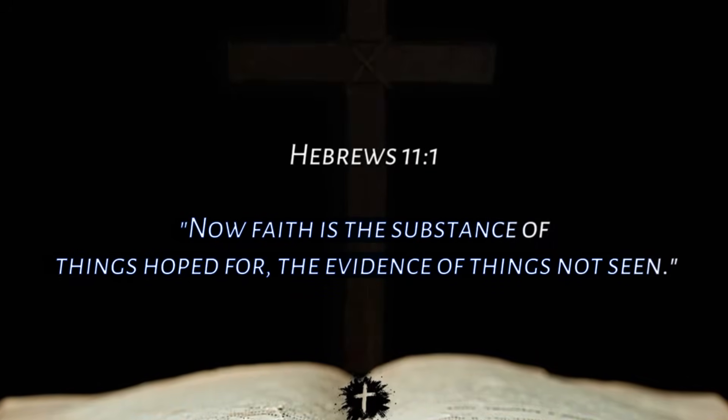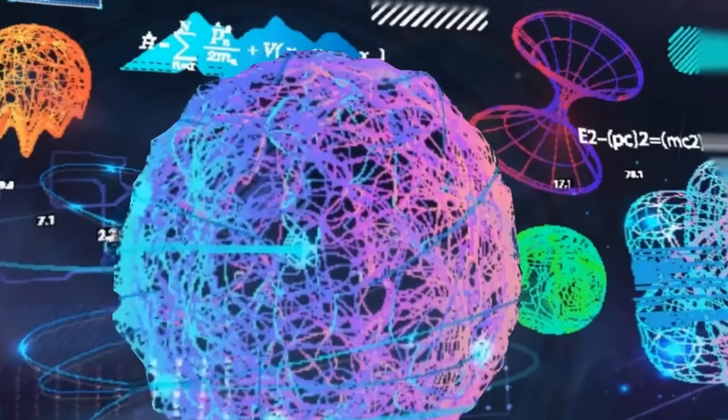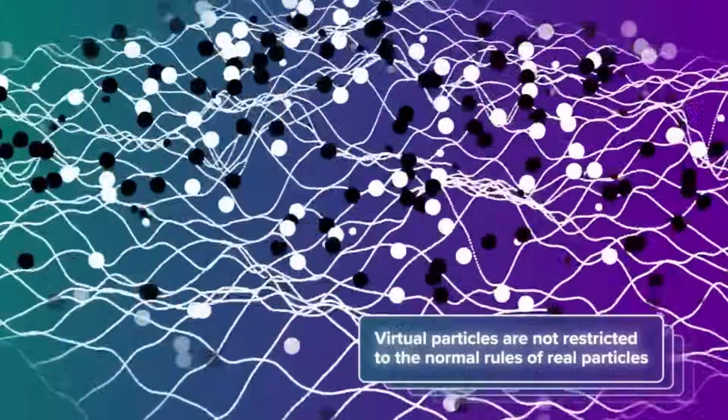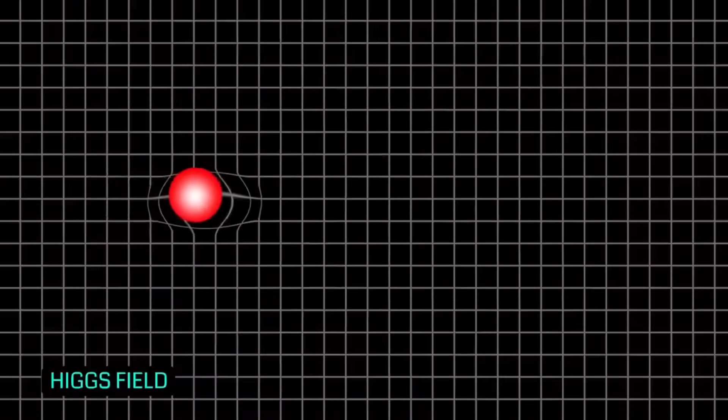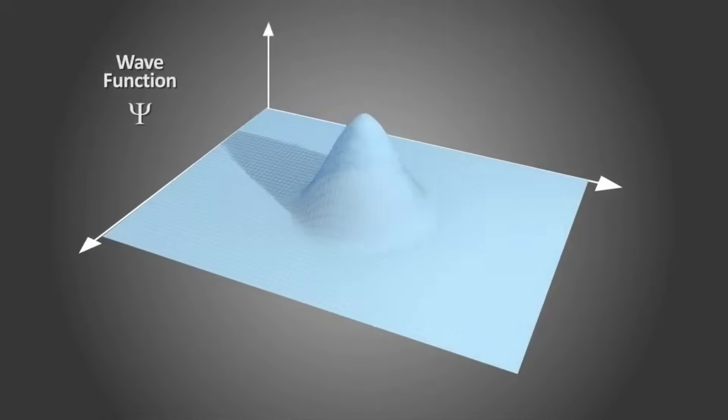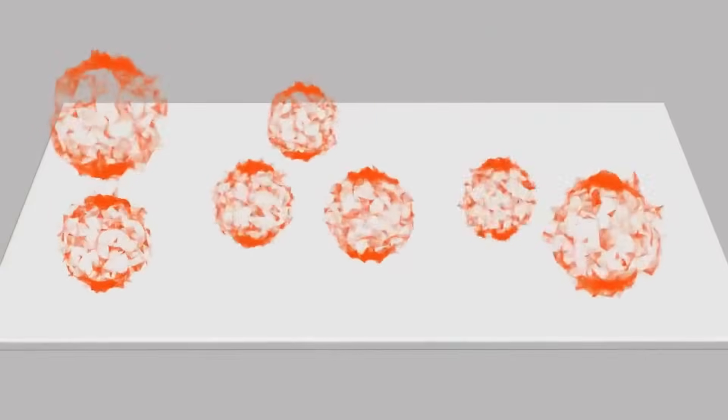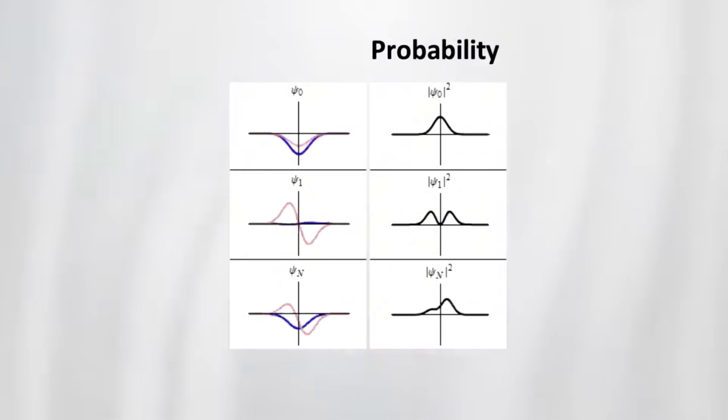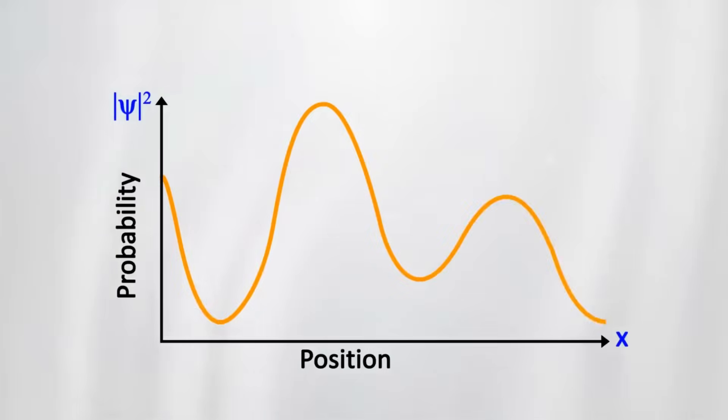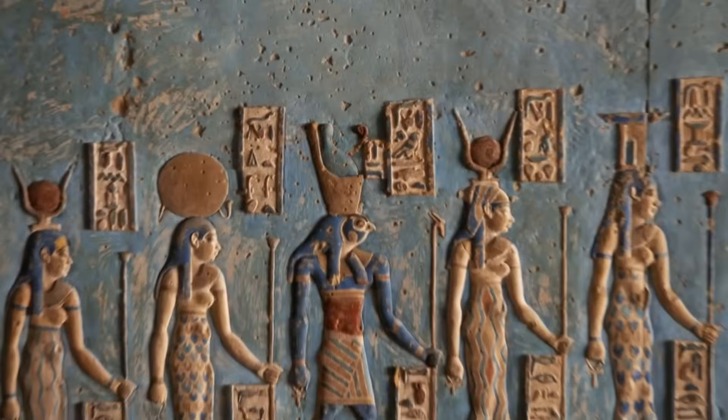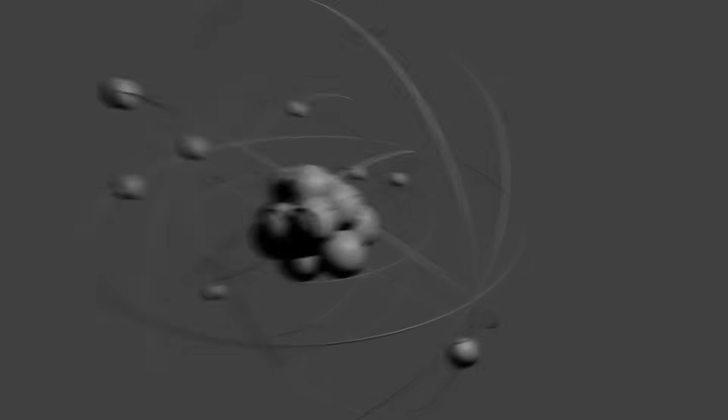Now faith is the substance of things hoped for, the evidence of things not seen. Hebrews 11:1. In quantum mechanics until we measure, particles exist in superposed states, multiple possibilities coexisting. They are not actualized until an observation collapses the wave function. Could faith function as the observer, collapsing potential into reality? When we believe, we give form to the unseen. When an electron's position is measured, it takes on a definite location. When a person has faith, they act on possibilities as if they were certain. The parallel is striking.